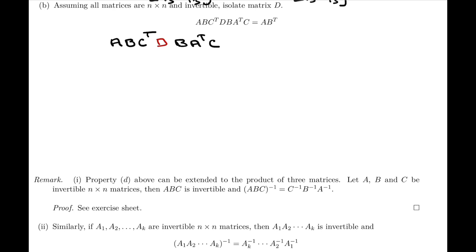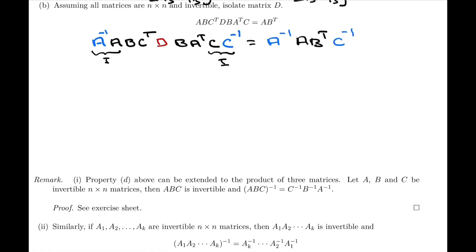Looking at the expression, we can only multiply by something on the left or on the right. To get rid of A on the left, I'll multiply by A inverse. On the right-hand side, to get rid of C, I'll multiply by C inverse. Whatever we do on the left, we do on the right. So on the other side I'll have: A inverse, then the matrix AB transpose which was already there, then C inverse. Since A inverse times A equals I and C times C inverse equals I, those terms simplify out. Our next line becomes B, C transpose, D, B, A transpose.